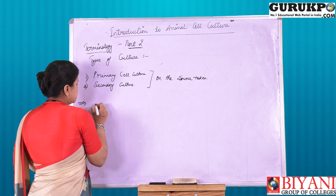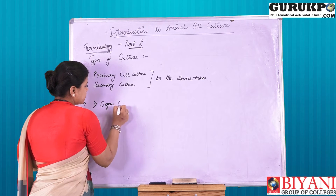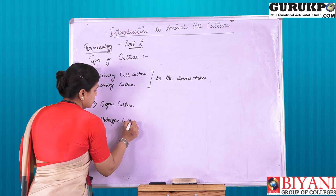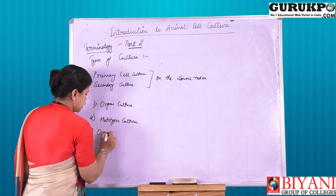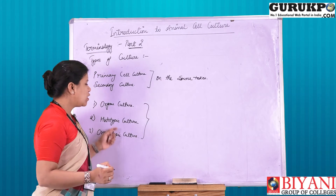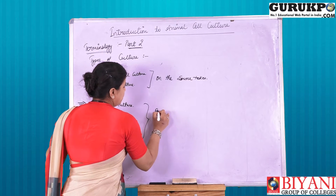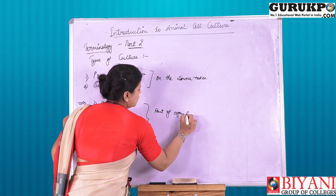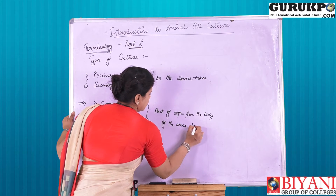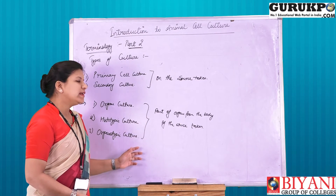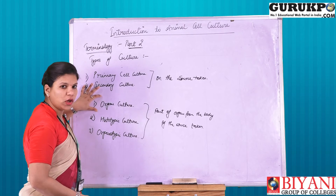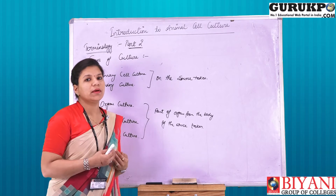Now comes the next type of culture, which includes first organ culture, second histotypic culture, and third organotypic culture. This particular characterization of the types of culture is based on the part or organ from the body of the source taken — specifically, based on the type of organ or cell which is taken from the body of the source. So first we will discuss about organ culture.